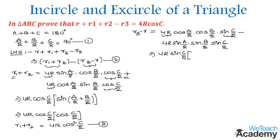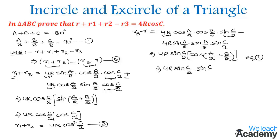The remaining terms are in the form cos(A/2)·cos(B/2) − sin(A/2)·sin(B/2), which equals cos(A/2 + B/2). Using equation 1, cos(A/2 + B/2) = cos(90° − C/2) = sin(C/2). Multiplying, we get r3 − r = 4r·sin²(C/2). Let us name this as equation 4.